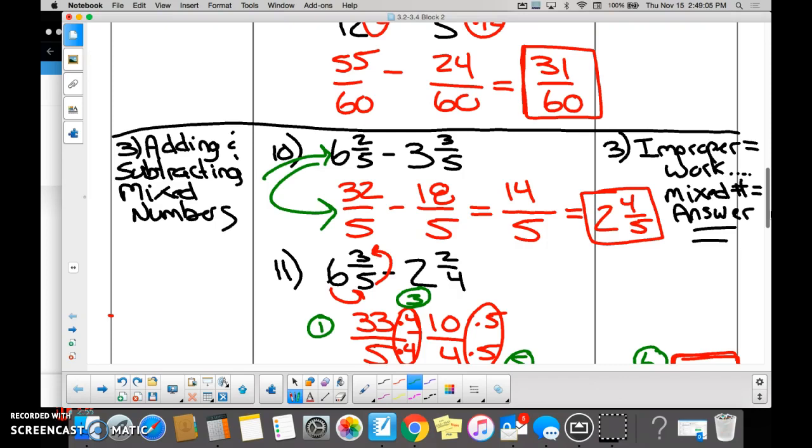Into improper fractions, we then lit up the denominators. And what do we know about the denominators? Common. That's awesome. So that means you simply have to do the subtraction, right? 32 minus 18 is 14. And the denominator is 5. Can you leave your answer as 14 over 5? No. Because what kind of fraction is that? Improper. You need to turn all impropers into mixed numbers.